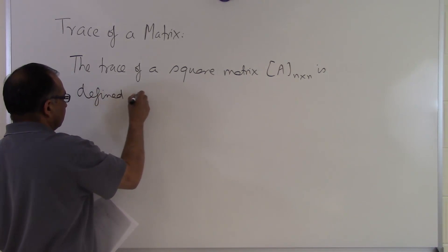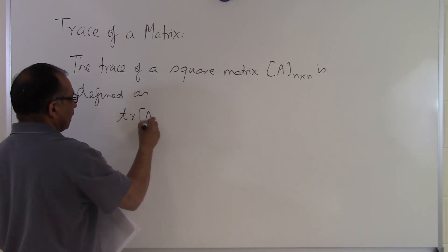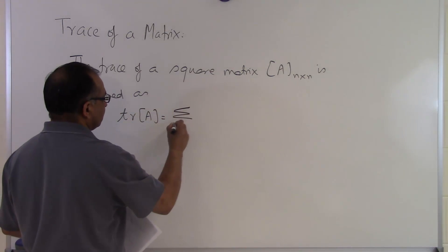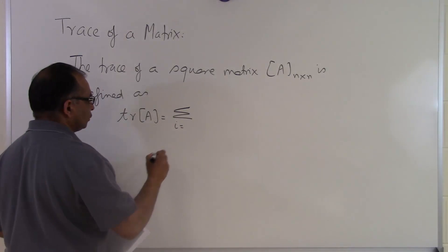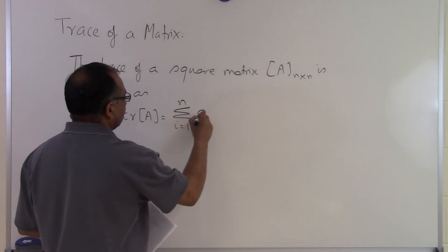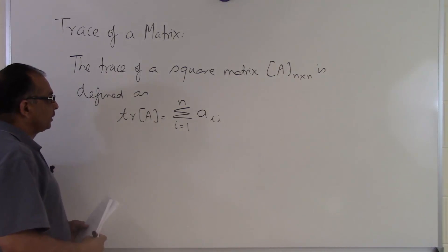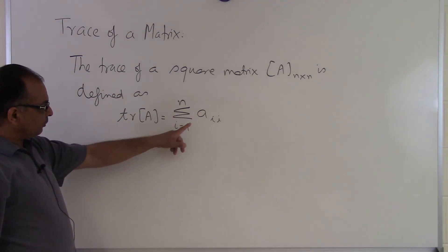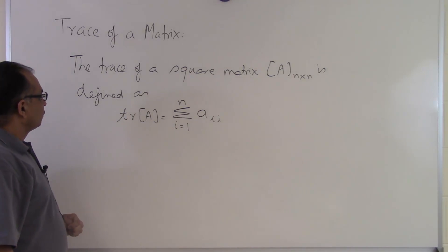we'll call trace as TR. So TR of A is summation i equals 1 to n of A_ii. So all you're doing to find the trace of a matrix is simply take all the diagonal elements and add them up. That's what the trace of a square matrix is.